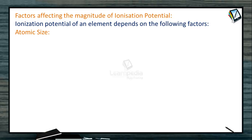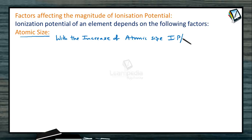The first factor is atomic size. With the increase of atomic size, the ionization potential decreases. With the increase of size, the nuclear power of attraction on the valency electrons will decrease. Then the removal of electron from the outer shell becomes easy, so the ionization energy required to remove the electron is less. Let's take a simple example for the Group 1 elements.